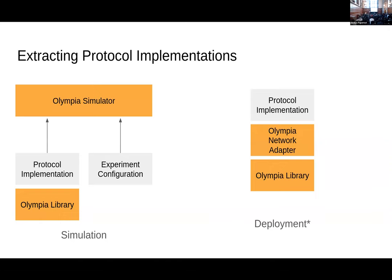To run protocols on real hardware, we also have a piece of code called the Olympia network adapter. You can use it to run the same protocol implementation — without changing the implementation at all — on real hardware. The deployment comes with a star because this isn't something we've tested heavily and probably wouldn't use in production as-is, but it's a prototype of a layer you could put between our library and your implementation to actually deploy it on real hardware.